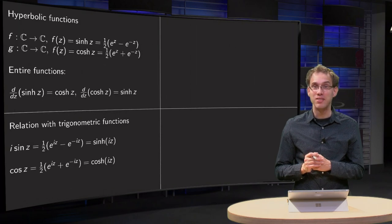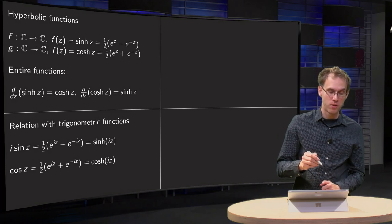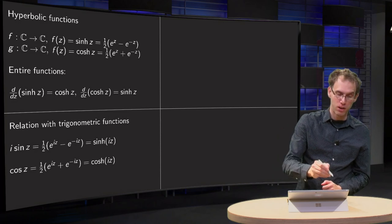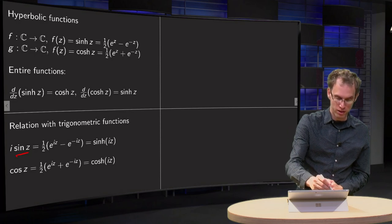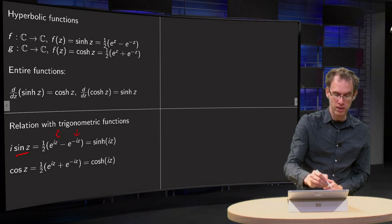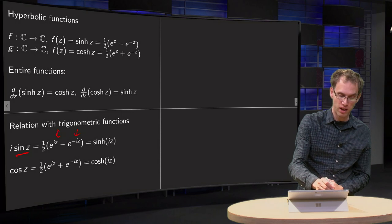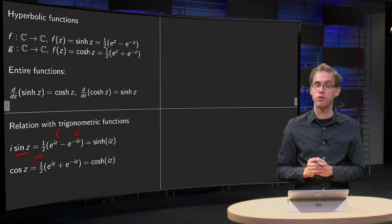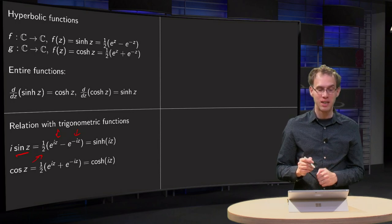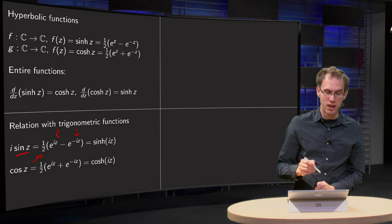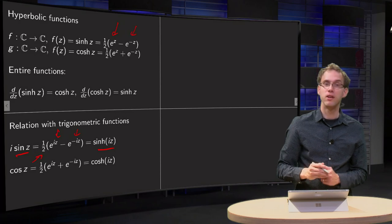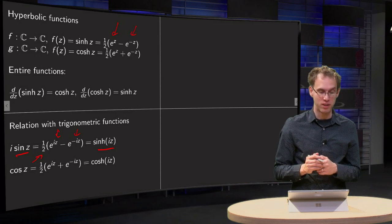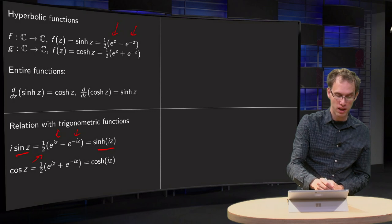So what's the relation with the trigonometric functions? If you take a look at sine of z, you have e to the power of iz minus e to the power of minus iz over two i. If you multiply that with i you get one half instead of one over two i, and then you notice that that's the same as the sine hyperbolic of i times z. If you plug in i times z, you get exactly i times the sine of z.